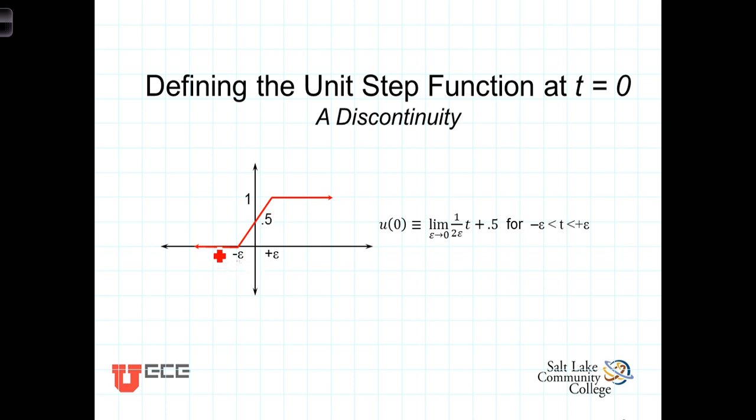we're going to, or for time less than that, the function is zero. For some short time period, starting at negative epsilon and going on to a positive epsilon, we're going to model this time frame as a straight line that intersects the vertical axis at 0.5.